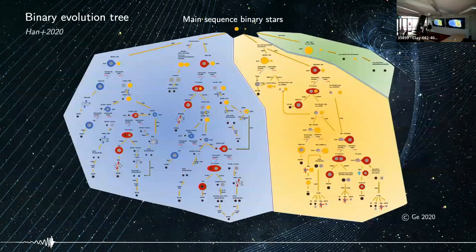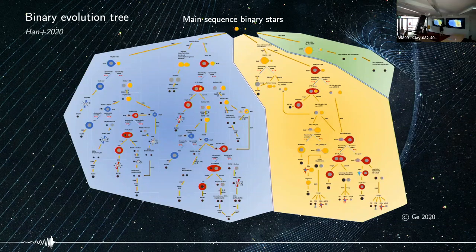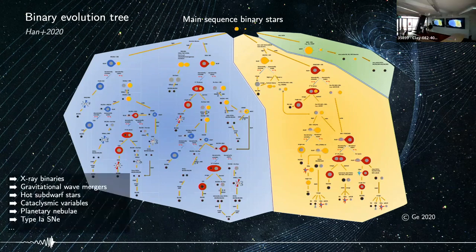This diversity of stellar interactions is illustrated by this rather intimidating diagram, showing all the types of interactions that can proceed from an initial pair of main sequence binary stars — mass transfer, common envelopes, supernovae in binaries — forming a variety of compact binaries such as binary black holes, double neutron stars, gravitational wave sources, X-ray binaries, progenitors of Type Ia supernovae, hot subdwarf stars, planetary nebulae, and many more.